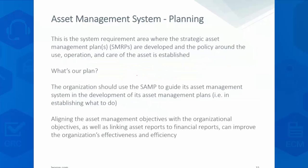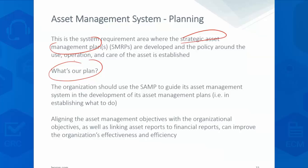On planning, the asset management system tells us that the strategic asset management plan is developed at this planning stage. What's our plan? What are we going to do with this equipment? How are we going to care for it? How long are we going to operate it? What's the useful life and possibly depreciation? What's our expected value and return? The strategic asset management plan is literally the translation of the corporate objectives into the activities we're actually going to do.